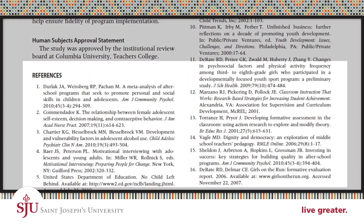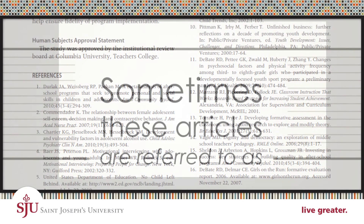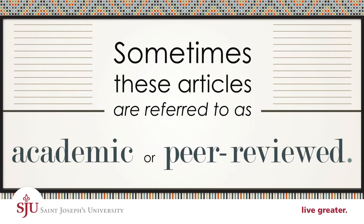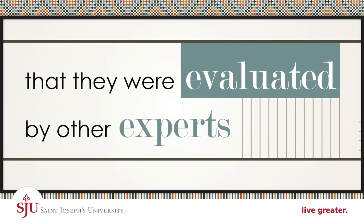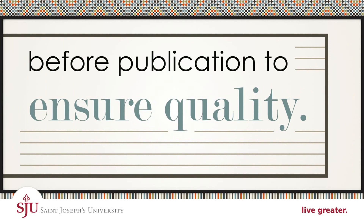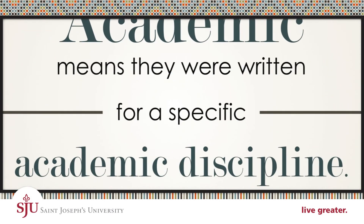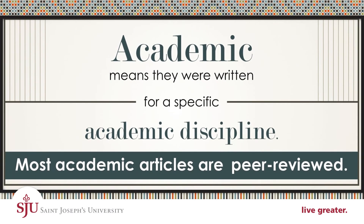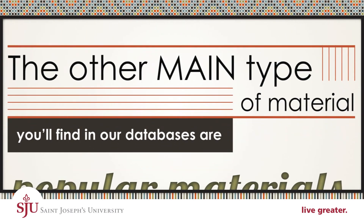Sometimes these articles are referred to as academic or peer-reviewed. Peer-reviewed means they were evaluated by other experts before publication to ensure quality. Academic means they were written for a specific academic discipline. Most academic articles are peer-reviewed.